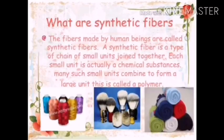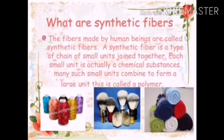Now we will learn what are synthetic fibres. The fibres made by human beings are called synthetic fibres. It is a type of chain of small units joined together. Each small unit is actually a chemical substance. Many such small units combine to form a large unit called a polymer. Fibres obtained through different chemical processes in the industries are known as synthetic fibres.